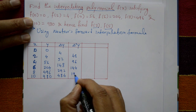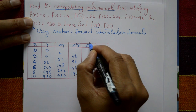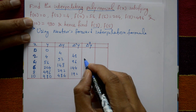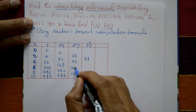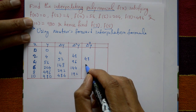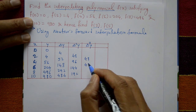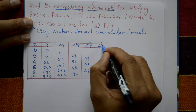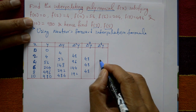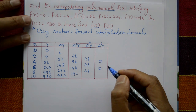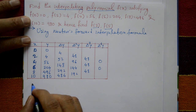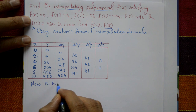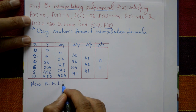The second forward differences give 48, and these two differences are also 48. The fourth forward difference is 48 − 48 = 0.